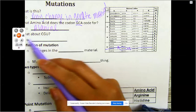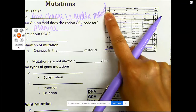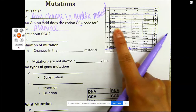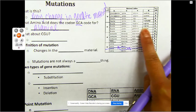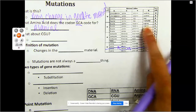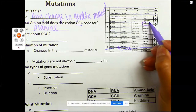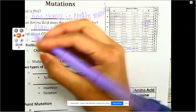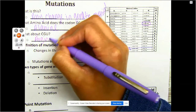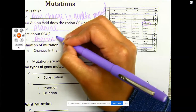What about CGU? Use first letter C, go over to the G box, finalize my selection by going to U. It is arginine — A-R-G-I-N-I-N-E.